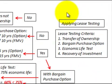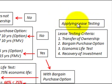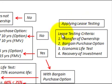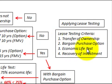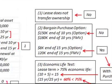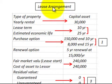We're going to go through an example where we apply lease testing criteria to determine what type of lease we should be recording for the lessee and the lessor. The first criteria we'll test for is the transfer of ownership, a bargain purchase option, the economic life test, and recovery of the investment on the lease. Let's go over and look at our lease arrangement.